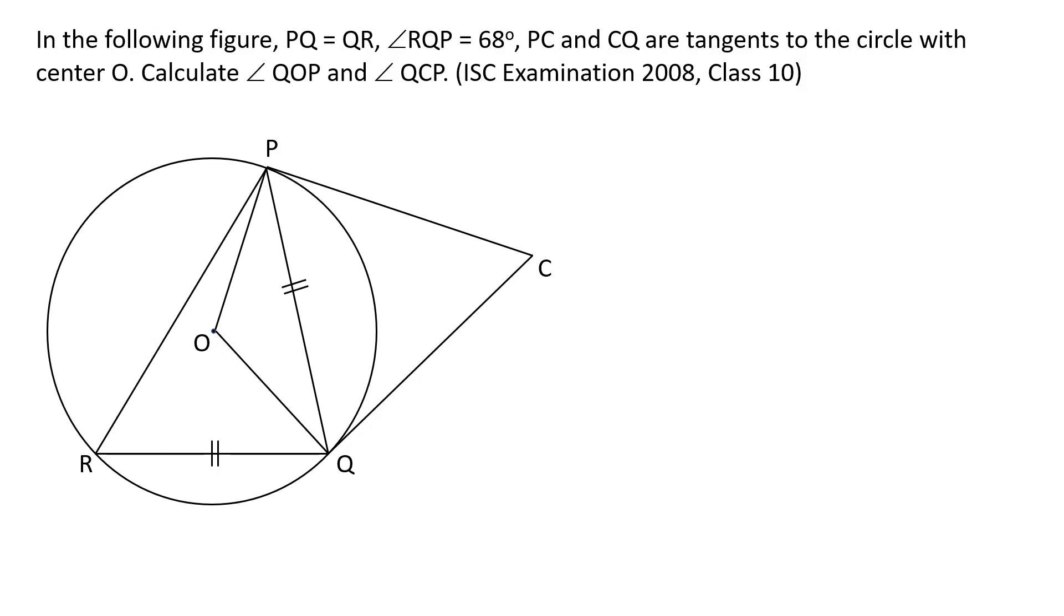In the following figure, PQ is equal to QR and angle RQP is 68 degrees. PC and CQ are tangents to the circle with center O. We have to calculate unknown angles QOP and QCP. This question is from ISC examination 2008 class 10. Now let's solve this question.